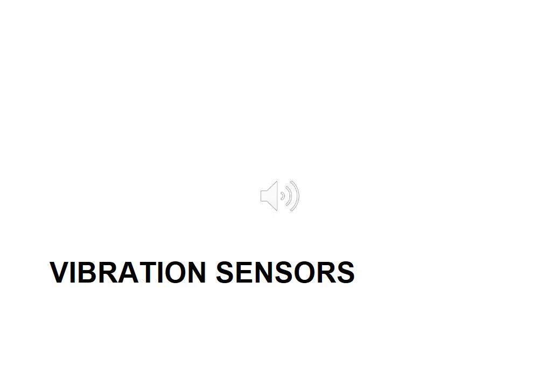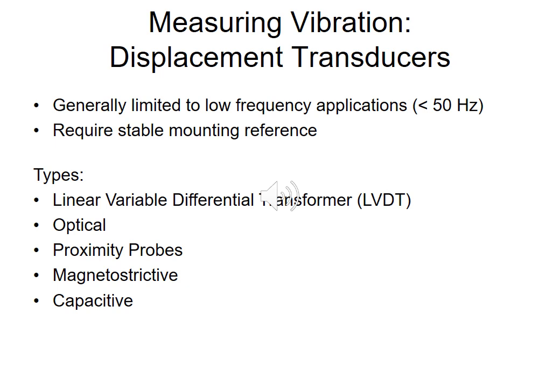On the next several slides we'll have a look at some different types of vibration sensors. Displacement transducers are generally used in low frequency applications where the relative amplitude of the displacement parameter is significant, and this enables us to get good signal-to-noise ratio in our transducer measurements.